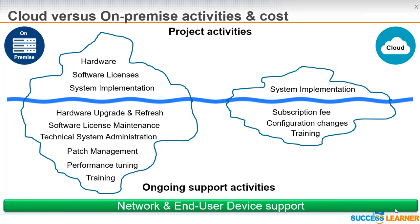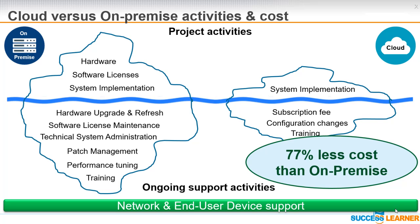One item excluded from this cost model is network and end-user device support. Both solutions require a working network infrastructure — connecting your data center or cloud provider to your end users. End-user devices, whether mobile, laptop, or workstation, also need to be supported, patched, and maintained regardless of which solution you choose. Since this cost applies equally to both, it has been taken out of the comparison equation.